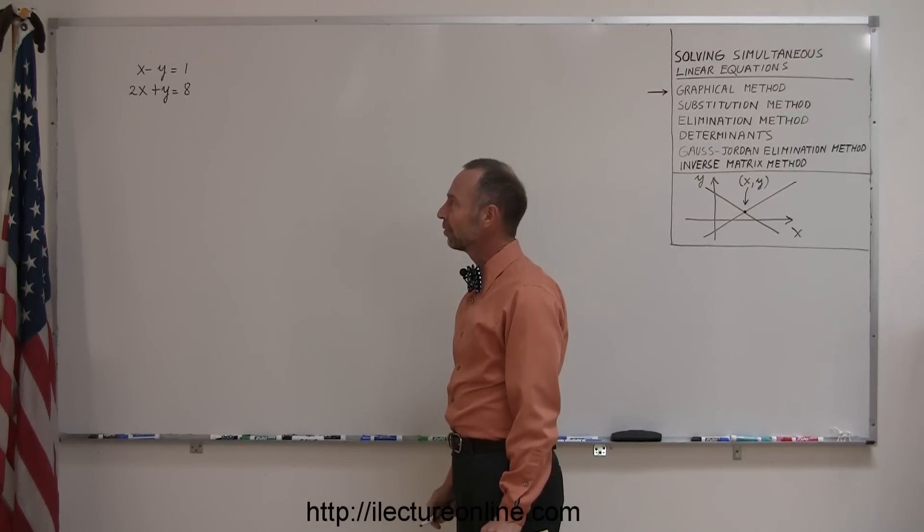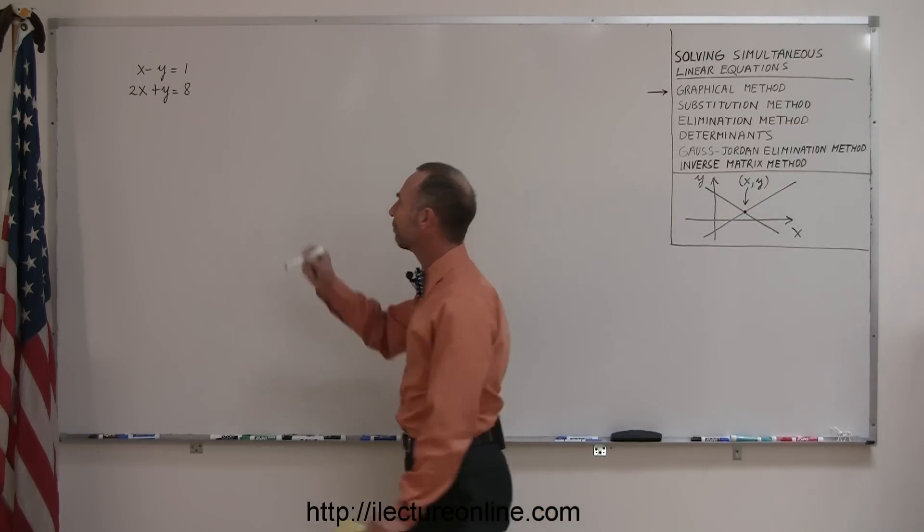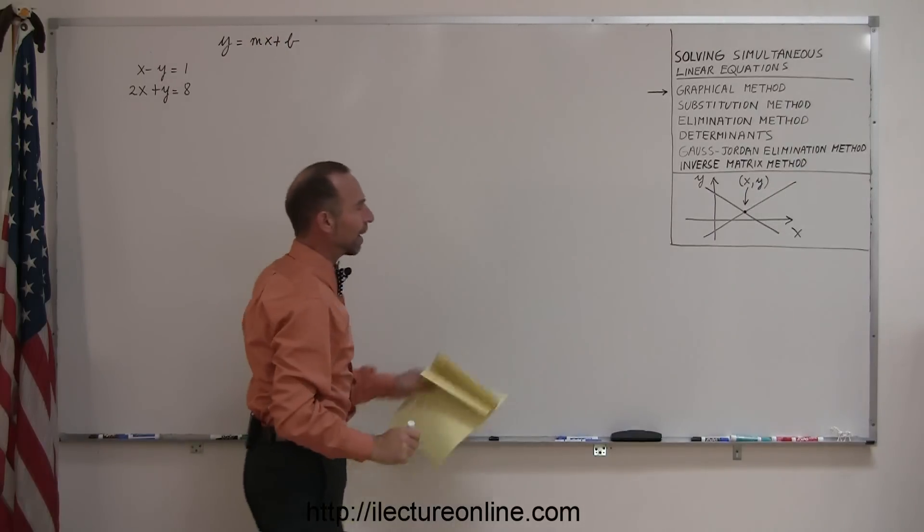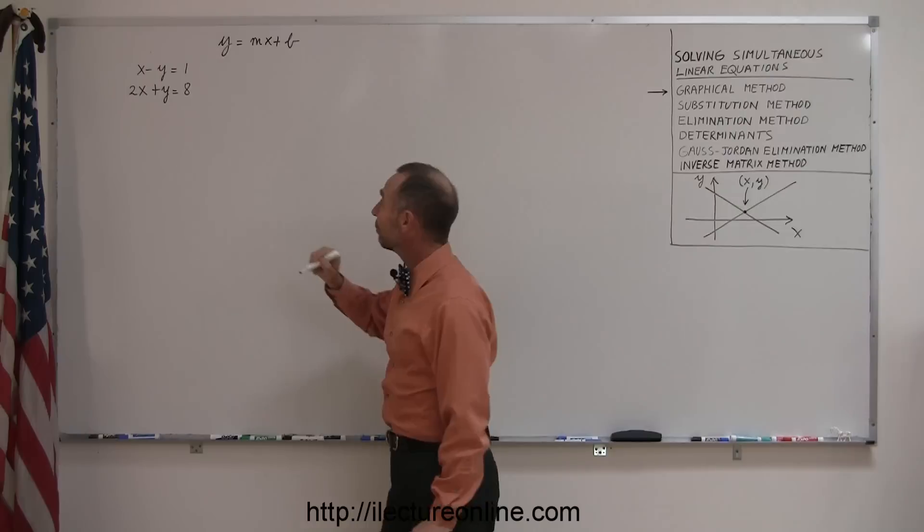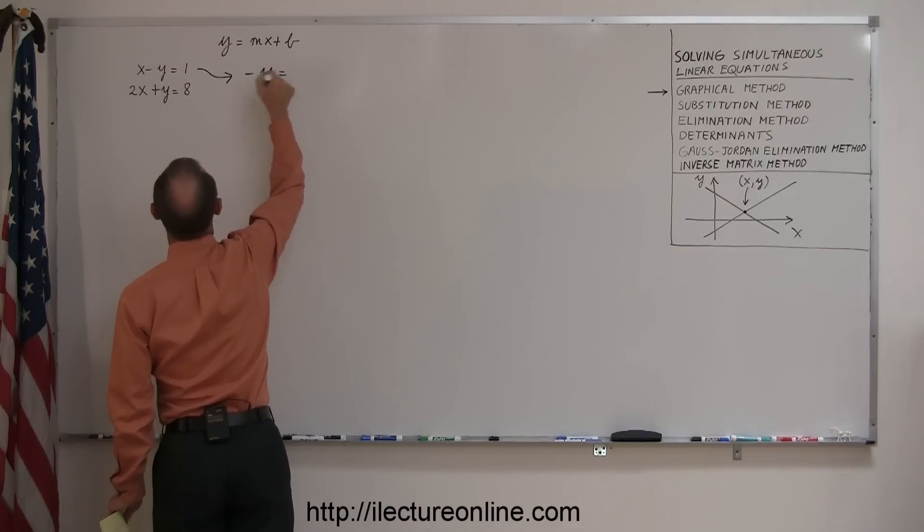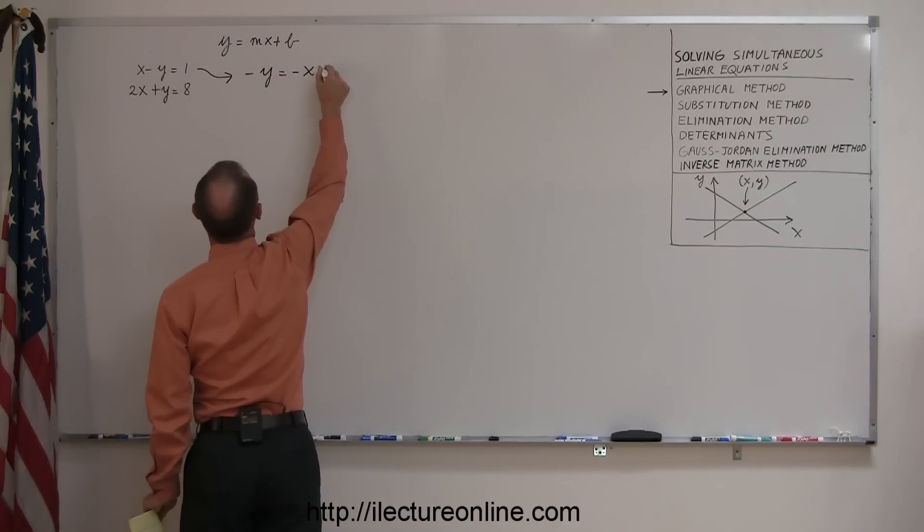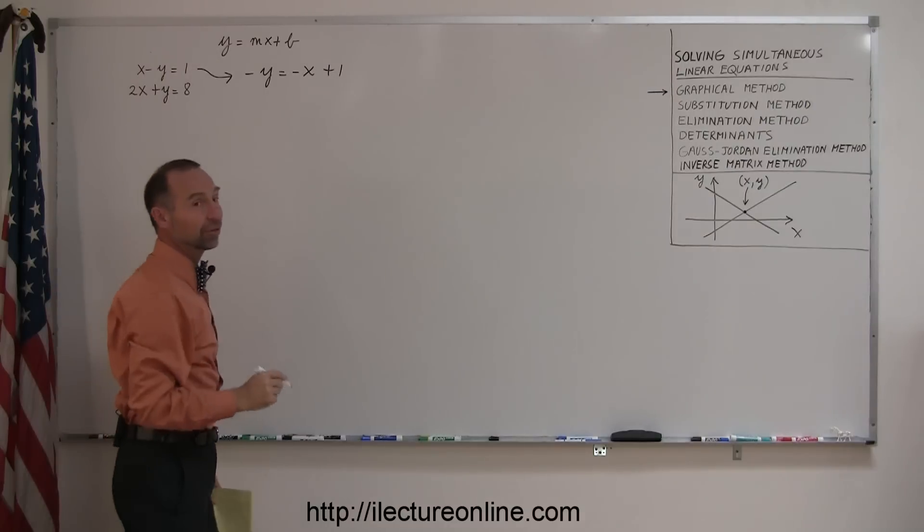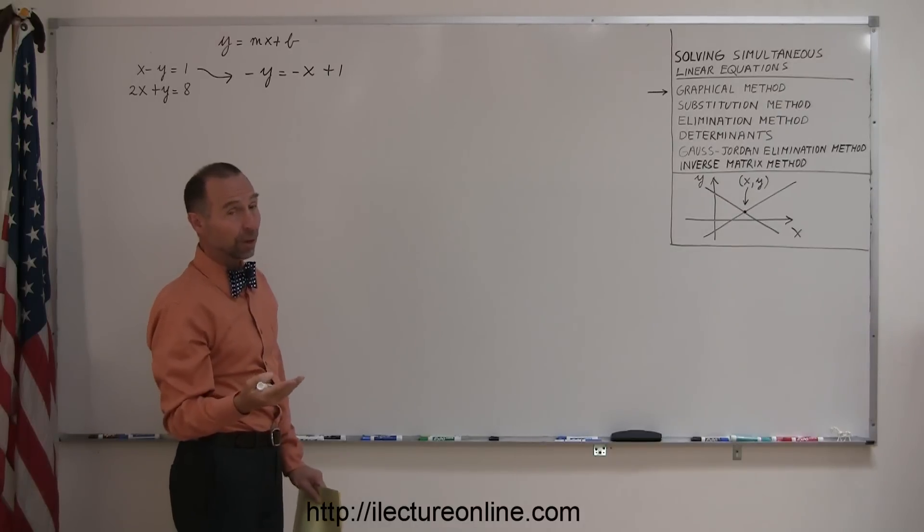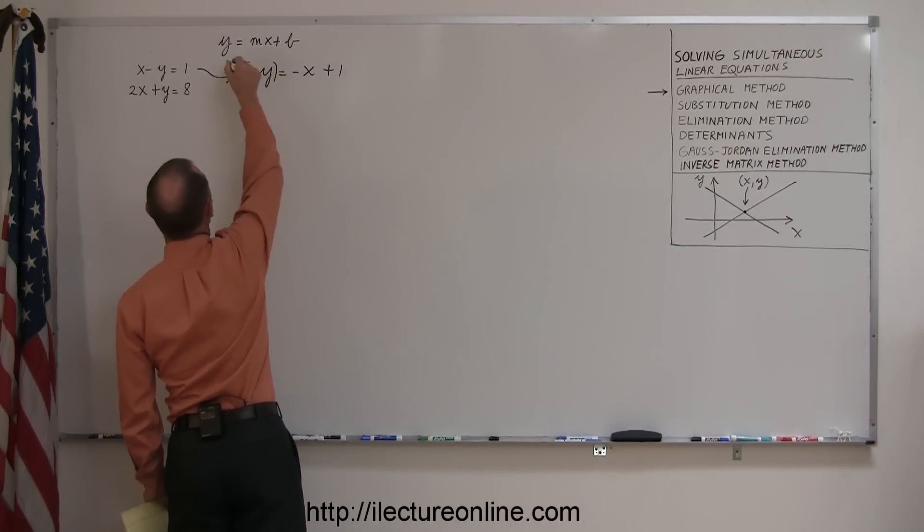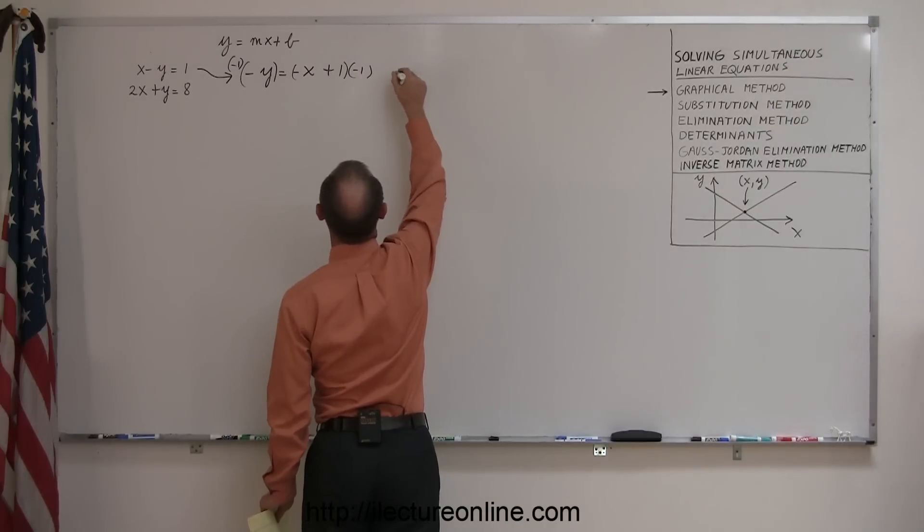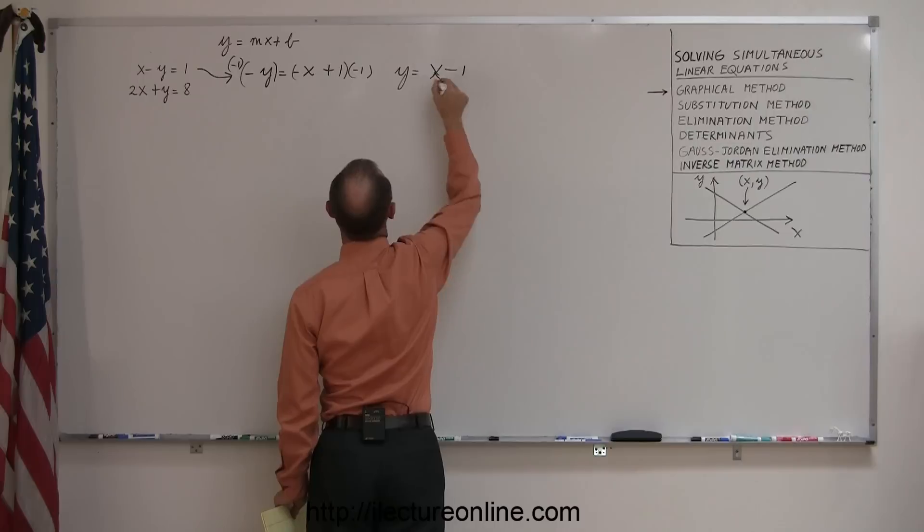There's my two equations. So what we want to do is, since we want to graph them, we want to first write them in the form y equals mx plus b. Remember, that's how we are able to graph linear equations. So taking the first one, I'm going to move the x to the other side, so I end up with minus y equals minus x plus 1. Remember, when we move something across the equal sign, the sign changes. And since I don't want a minus y, I want a plus y, I'm going to multiply both sides of the equation by a negative 1. And that means my equation becomes y equals x minus 1.